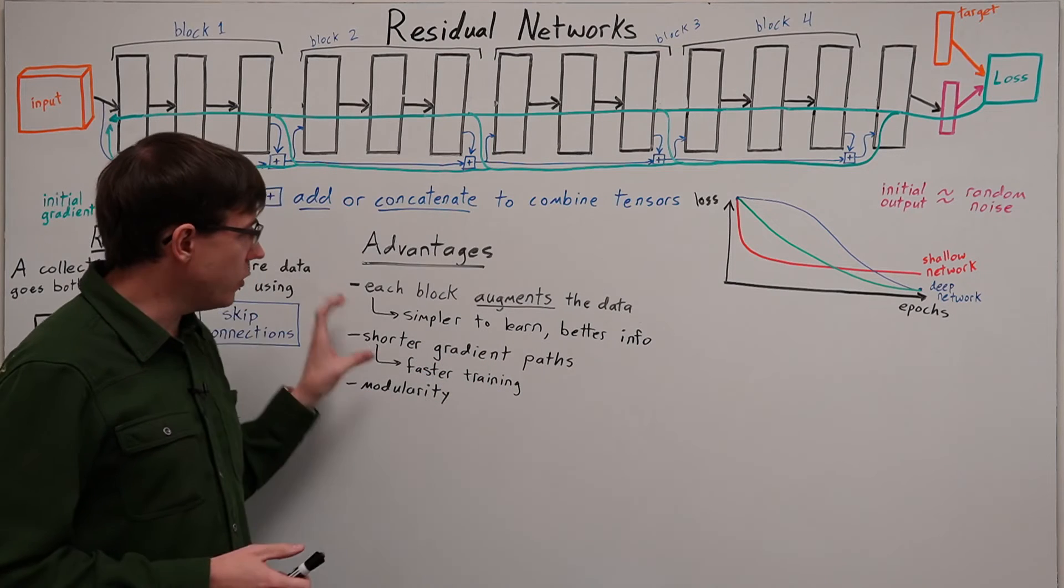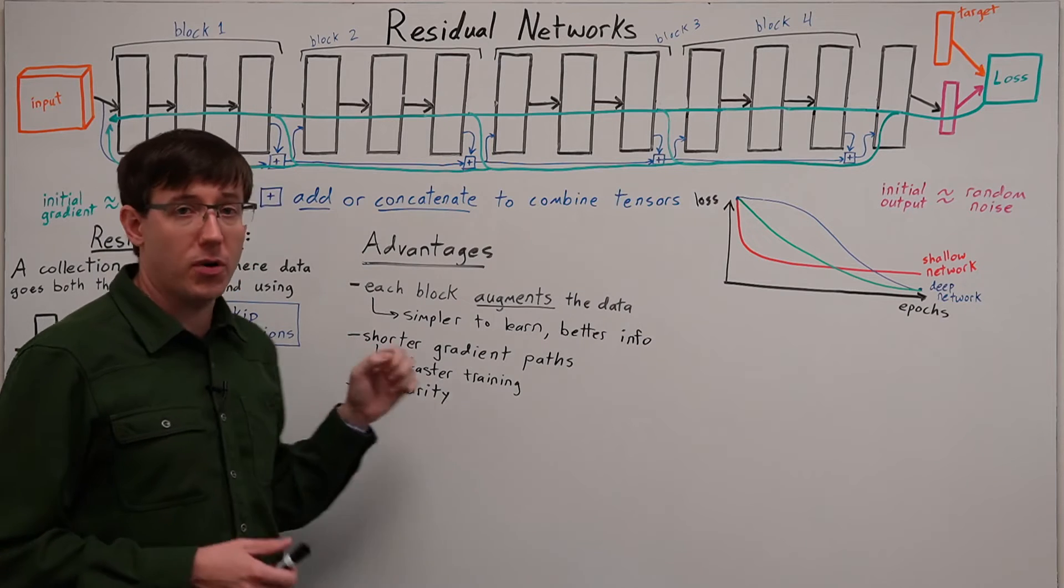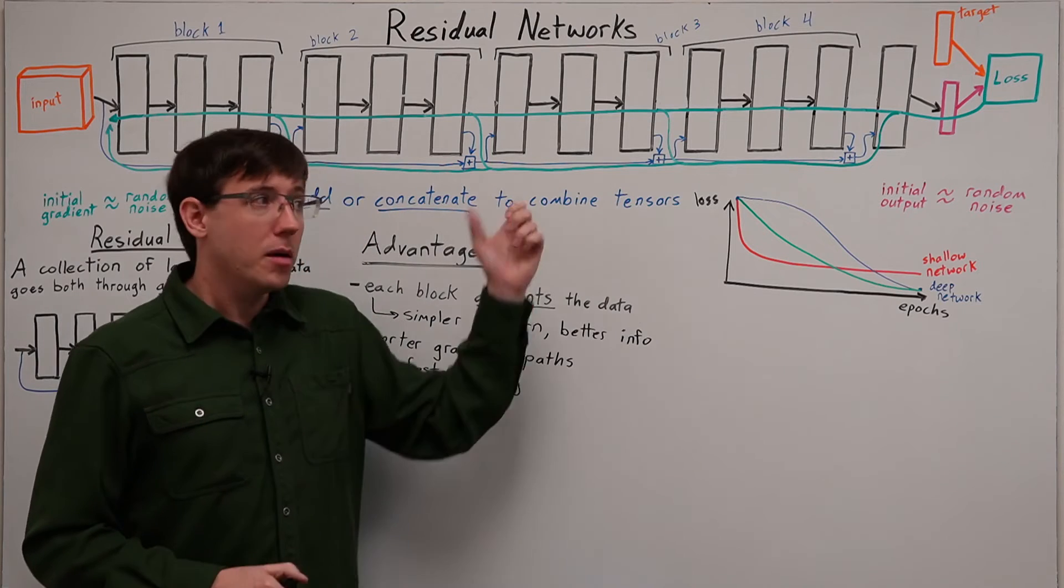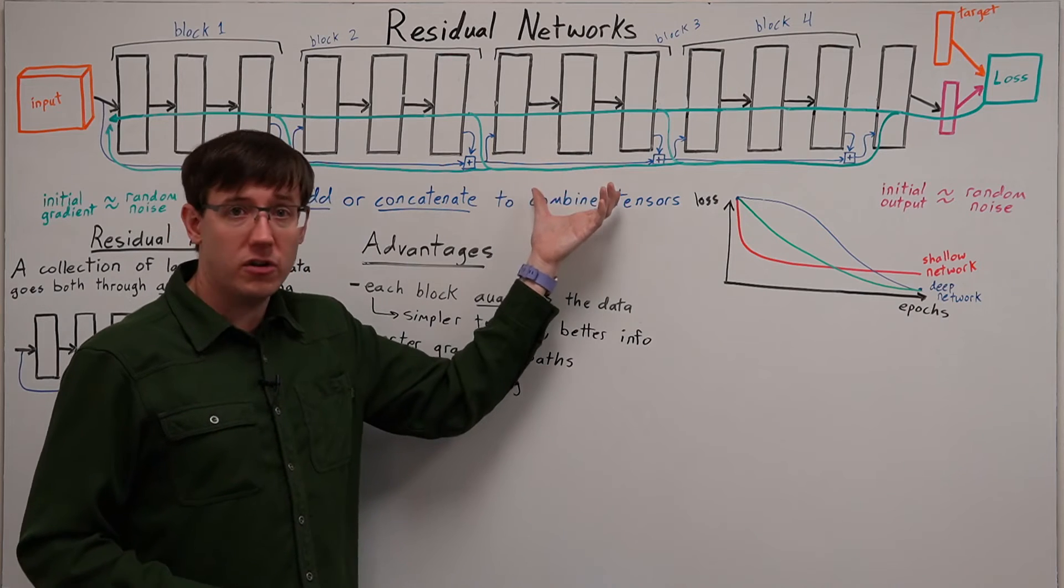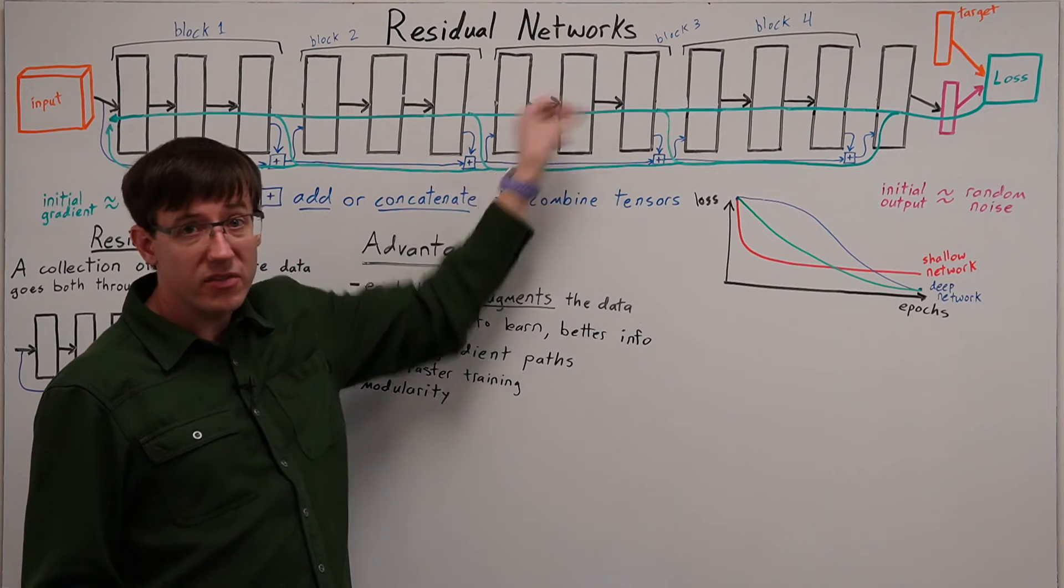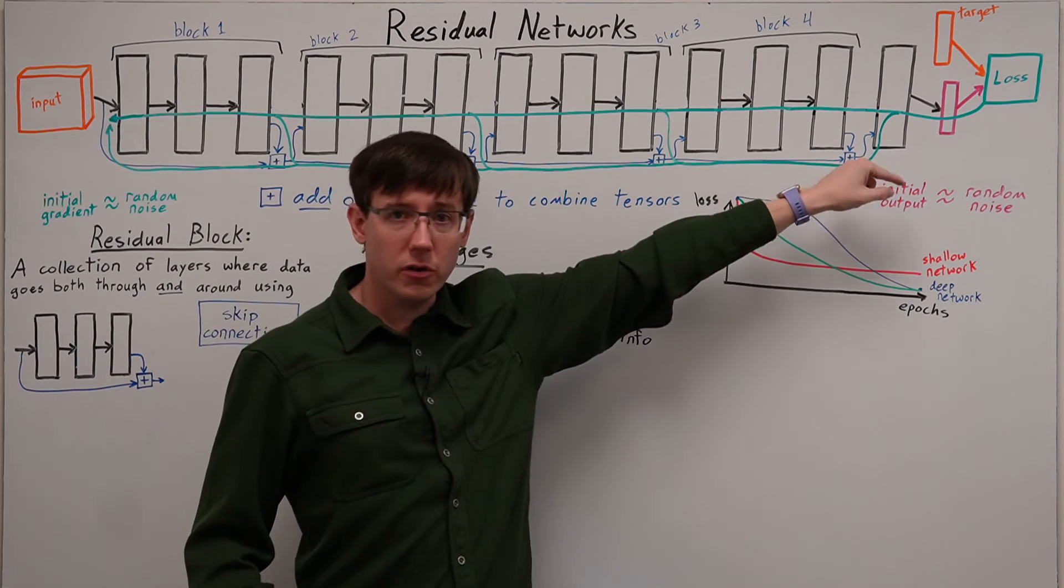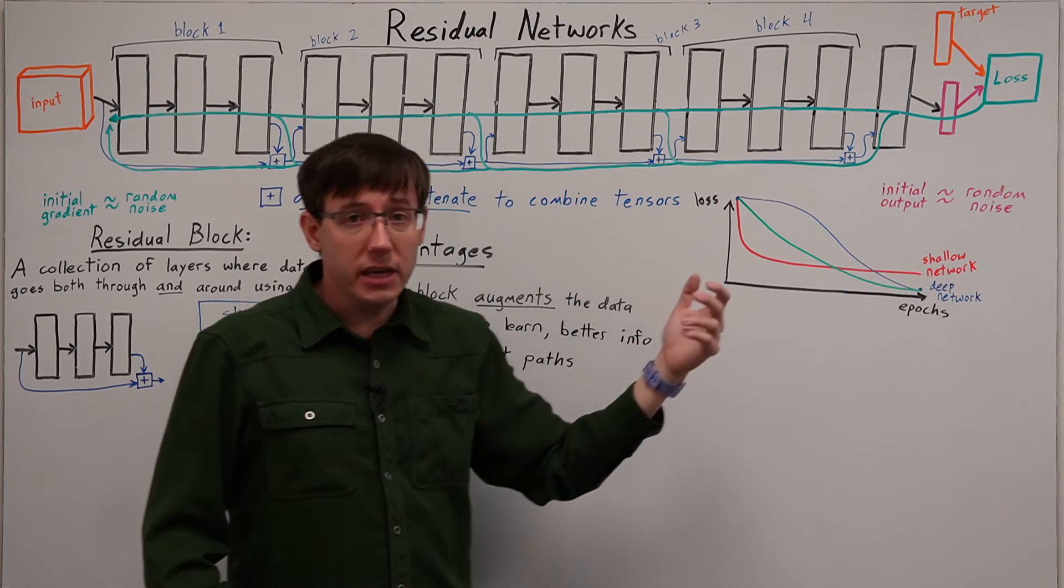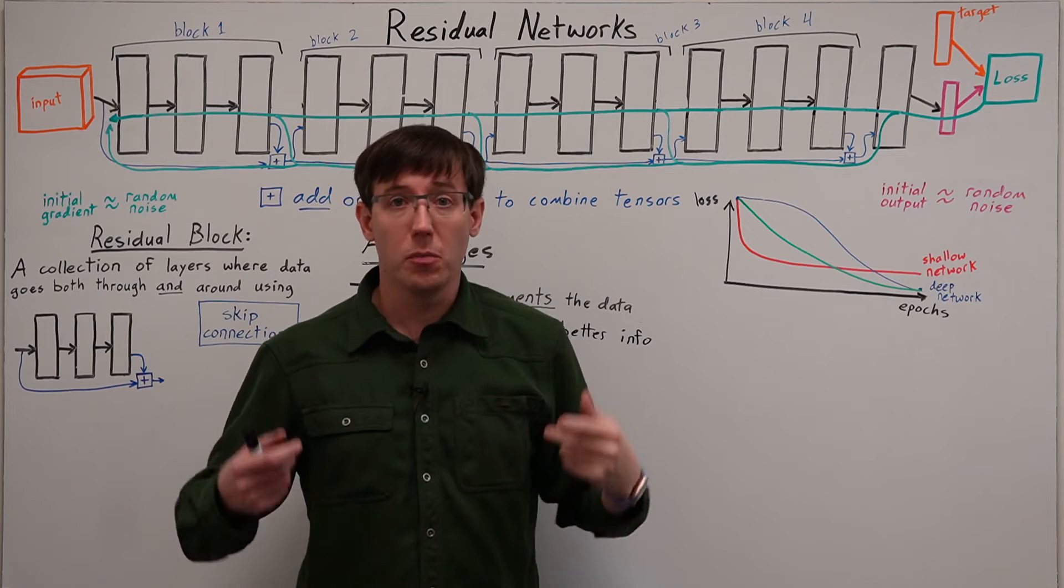So these first two advantages of simplifying the function we need to learn, and speeding up the propagation of gradient information, are the main motivations behind building residual networks. But residual blocks turn out to have an additional advantage of modularity. Since each of these blocks have essentially the same structure, and since we are able to short circuit around those blocks in the initial training, it's relatively easy to add more blocks and build a deeper, more powerful network.